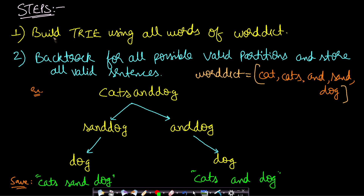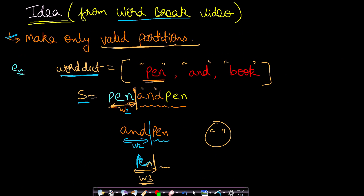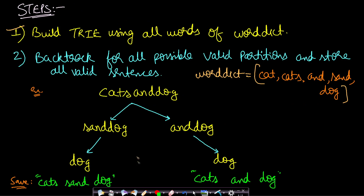Now what are the steps to solve the Word Break 2 problem? First, store the word dictionary somewhere for efficient matching. The most efficient data structure is a Trie — it's the best for checking if a string is present in the dictionary. So we build the Trie using all words of the word dictionary. Once done, we backtrack for all possible valid partitions and store all valid sentences.